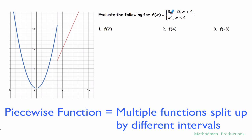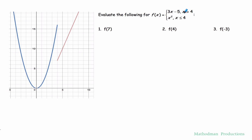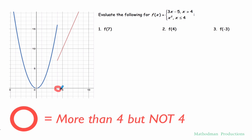For instance, this is saying that anywhere where the domain is more than 4 to use this equation 3x minus 5. So anything more than 4, we'll put an open circle representing that it cannot be 4, more than 4. I'm going to use this line right here 3x minus 5.